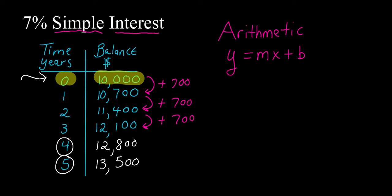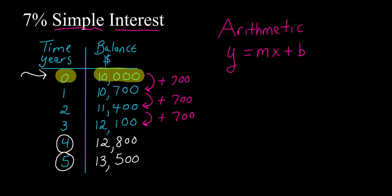Now let's take this one step further. Let's say we wanted to find the end-of-year balance at year thirty. One way is to keep adding seven hundred each time until you get to year thirty — that works, but there's a quicker way, and that's what I'm going to show you.